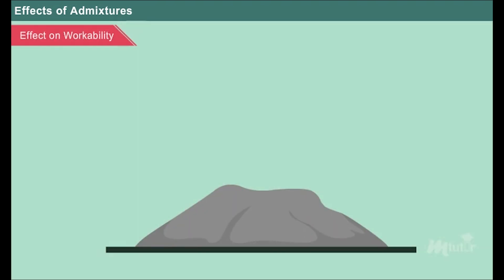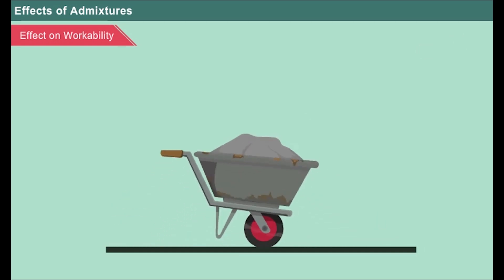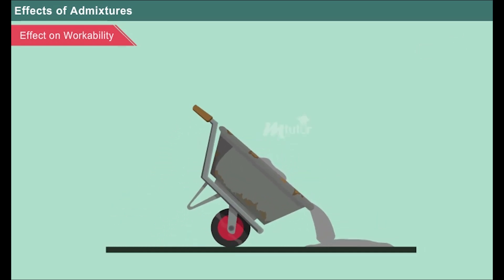Effect on workability: When we need a highly workable concrete, we add a plasticizer to the concrete mixture to make it more workable. These admixtures are absorbed by cement particles which further create a repulsive force between the particles to overcome the attractive force. This improves the fluidity of concrete thereby making it more workable without affecting the water-cement ratio.